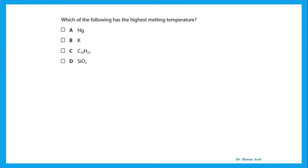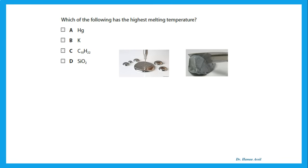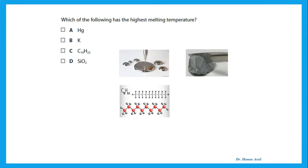When comparing melting temperatures: mercury is a liquid metal; potassium (Group 1) is a soft metal with moderate melting point; C10H22 is a nonpolar straight-chain molecule with only London dispersion forces and a very low melting point; silicon dioxide is a giant three-dimensional covalent structure with many strong covalent bonds, giving it the highest melting temperature.